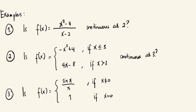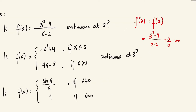Let's consider example number one. Is f(x) = (x² − 4)/(x − 2) continuous at x = 2? Observe that if we solve for f(2), we get (2² − 4)/(2 − 2), which is 0/0. This is already undefined. Therefore, the answer is no — this function is not continuous at x = 2.